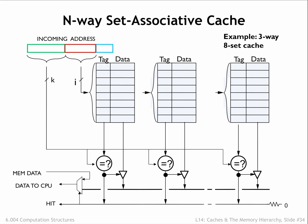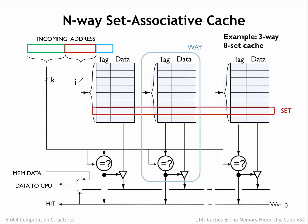Here's a slightly more detailed diagram, in this case of a 3-way 8-set cache. Note that there's no constraint that the number of ways be a power of 2, since we aren't using any address bits to select a particular way. This means the cache designer can fine-tune the cache capacity to fit the space budget. Just to review the terminology: the N cache lines that will be searched for a particular cache index are called a set, and each of the N sub-caches is called a way.